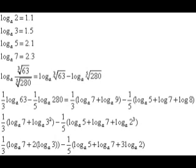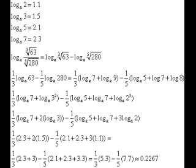Now we can change the log of 9 into the log of 3 squared, and the log of 8 into the log of 2 cubed. Now we can put the 2 down in front, and the 3 down in front. Now we can substitute log of 2, 3, 5 and 7 to get our final value of approximately 0.2267.